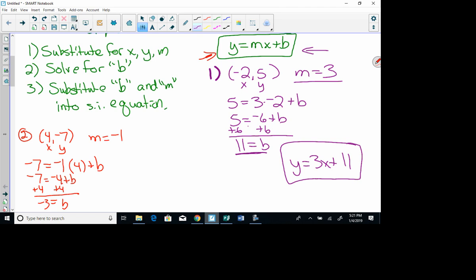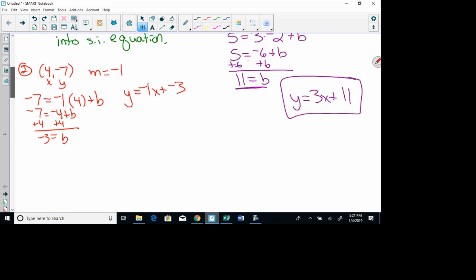Last step, substitute b and m into the slope-intercept equation. y equals negative 1x plus b is negative 3. Okay, now, you don't have to do this for all of these, but for this one, we're going to graph it. Remember, graph negative 3, and then I go down 1 over 1.